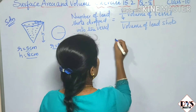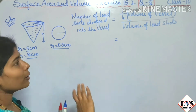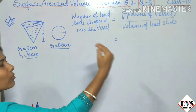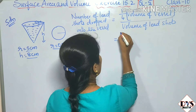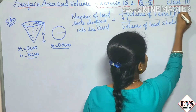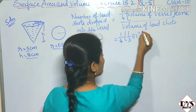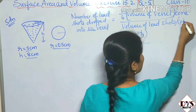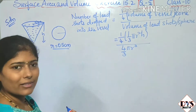We use one-fourth because when lead shots are dropped, one-fourth of the water flows out — meaning the volume displaced equals one-fourth of the vessel's volume. Volume of vessel (cone) = (1/3)πr²h. Volume of lead shot (sphere) = (4/3)πr³. So the formula becomes: number of lead shots = [(1/4) × (1/3)πr²h] ÷ [(4/3)πr³].